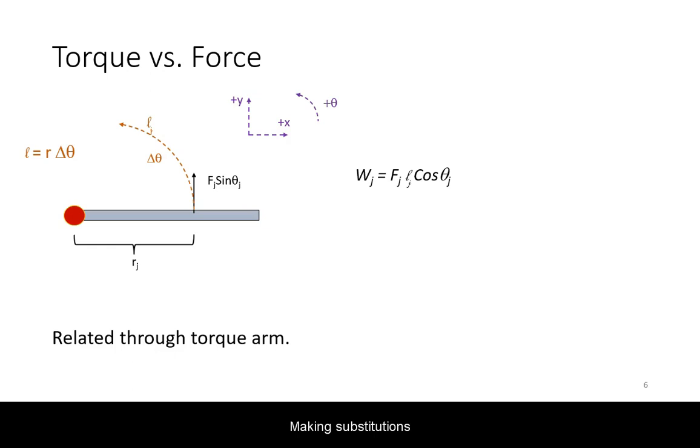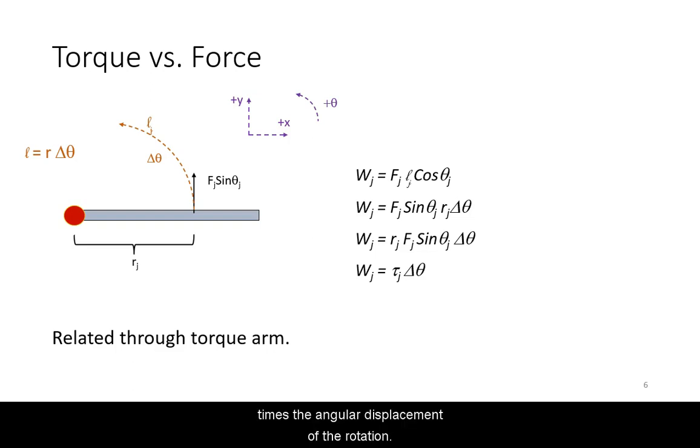Making substitutions to angular coordinates, we can derive that the work done by the torque will equal the magnitude of that torque times the angular displacement of the rotation.